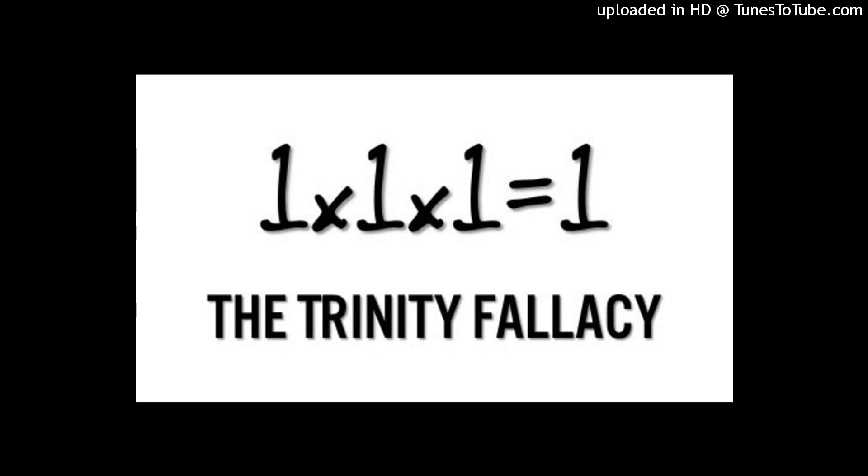This contradiction becomes even clearer when we apply basic rules of division. When you divide an odd number by two, the result is never a whole number. Since the Trinity claims to be divisible by two and still retain its form as an odd number, this creates an impossible situation within the rules of basic arithmetic. The concept is, therefore, mathematically flawed.